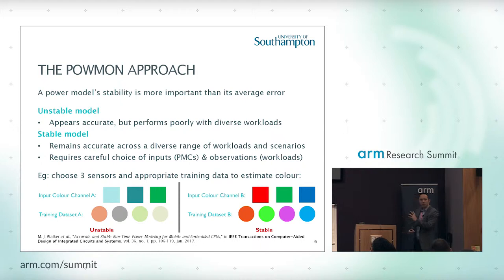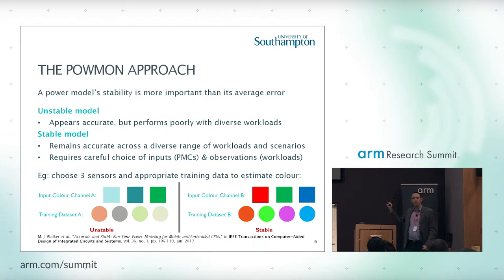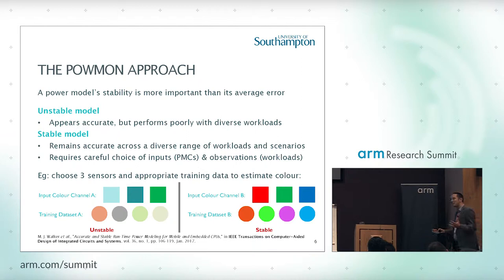A fundamental viewpoint here is that lots of existing literature publishes power models based on performance counters and reports a good average error of a few percent, claiming it's the best model. We argue that's an important statistic but not the only one. The stability of the model — its ability to work with workloads it hasn't seen before, across a diverse set — is actually more important. An unstable model may appear accurate on the tested workloads, but throw other applications at it and it will have massive errors. A stable model remains accurate across a variety of workloads.